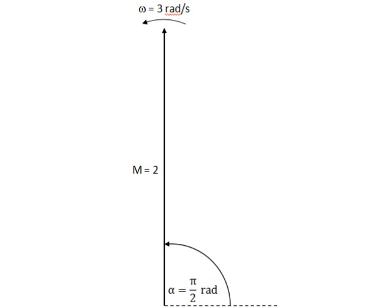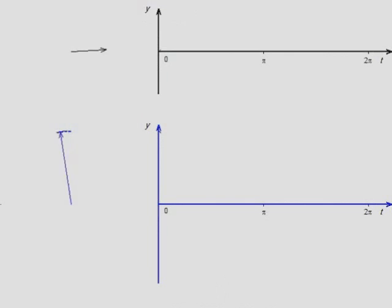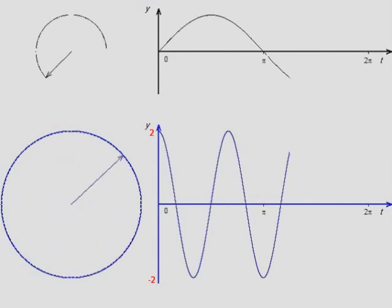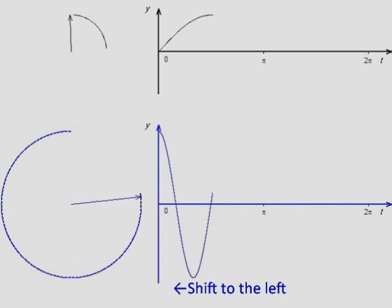Our next example considers a phasor of magnitude 2, angle of velocity 3 radians per second, and phase angle pi over 2 radians. The resulting sine wave has an amplitude of 2, triple the frequency, and is slightly shifted to the left.